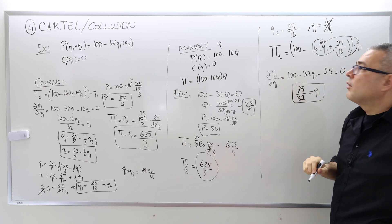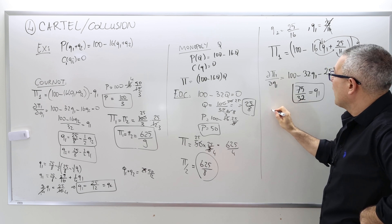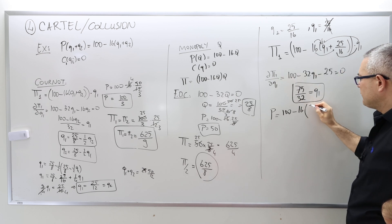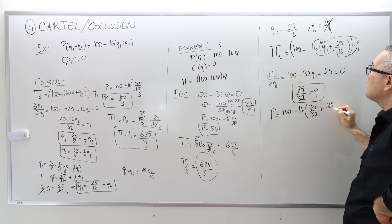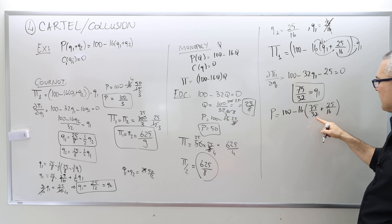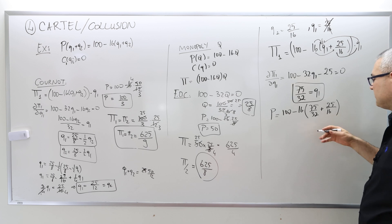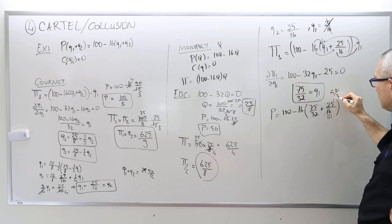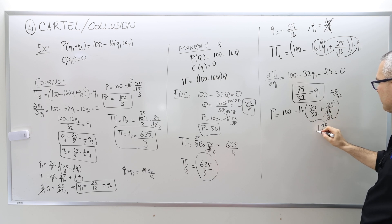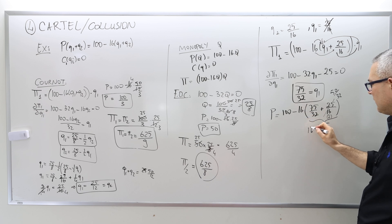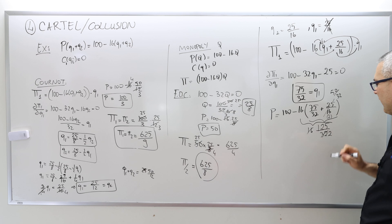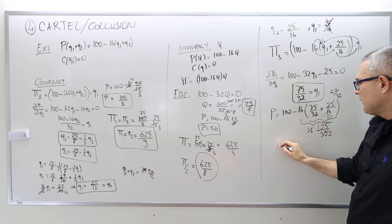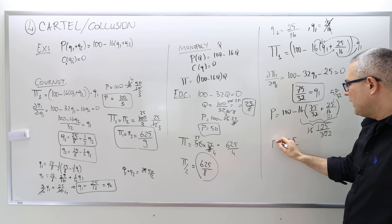With Q1 equal to 75/32, the price is 100 minus 16 times (75/32 plus 25/16). Converting 25/16 to 50/32, total quantity is 125/32. Multiplying 16 times 125/32 gives 125/2. So the price equals 100 minus 125/2, which is 75/2.